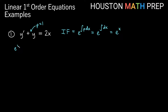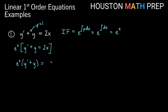We'll multiply our entire equation by e to the x. I'm going to leave the left side factored rather than distributing. I know that when I integrate this, the left side is actually a product rule of the integrating factor times y. So when we integrate the left side with respect to x, we get y times e to the x — that's our antiderivative because this is a product rule. On the right side we get the antiderivative of 2x times e to the x dx.